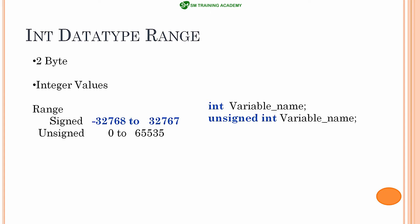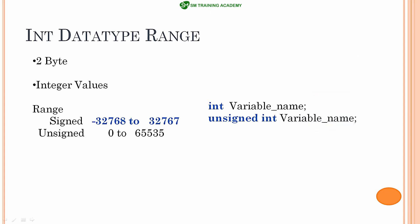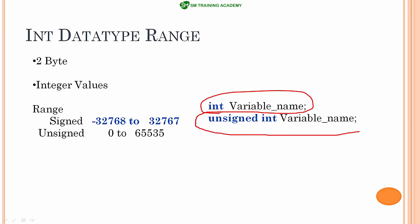The declaration looks like this — for the signed version of variables, you declare like this: int space variable_name. And for the unsigned version, you just want to add the unsigned type qualifier before the int datatype name.